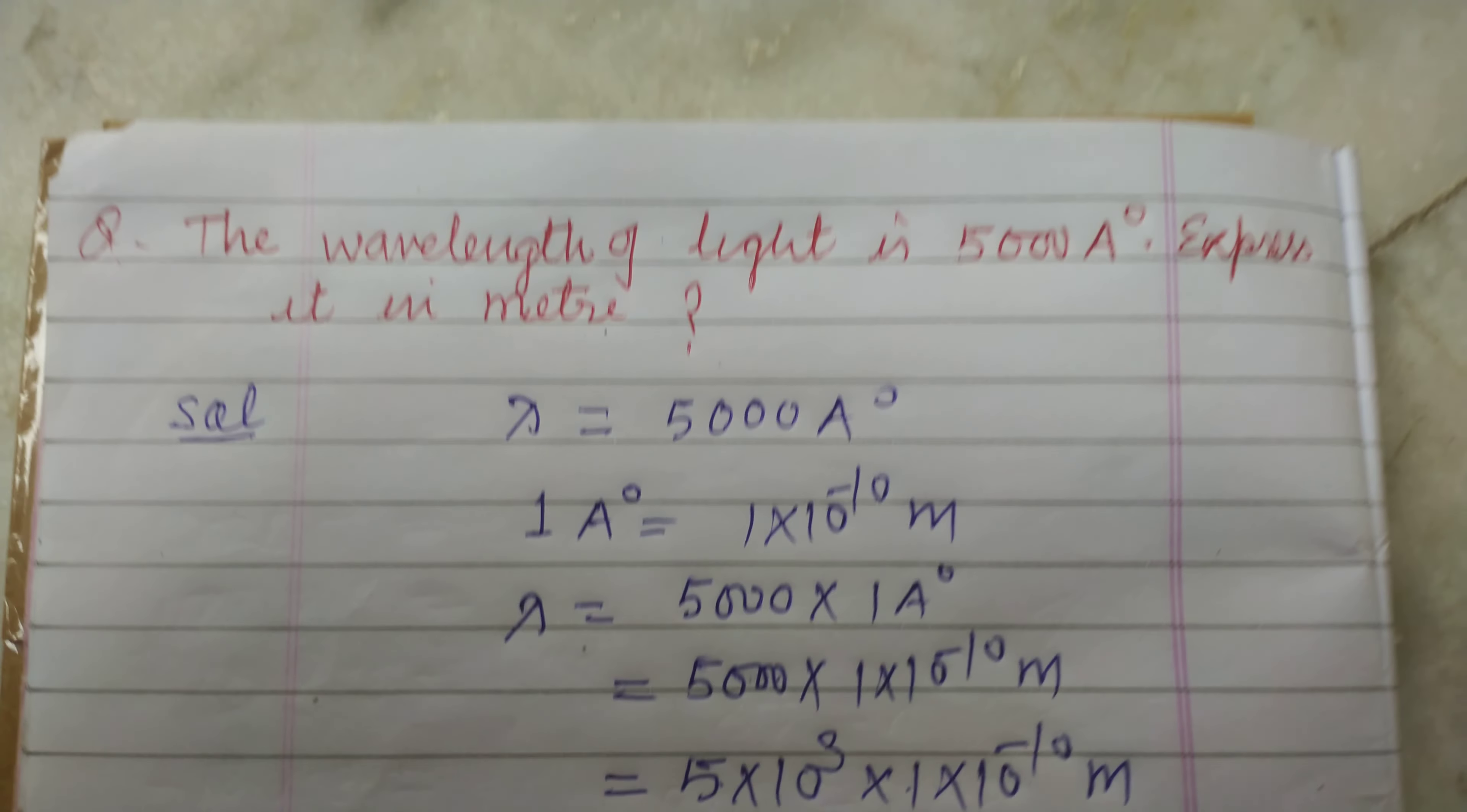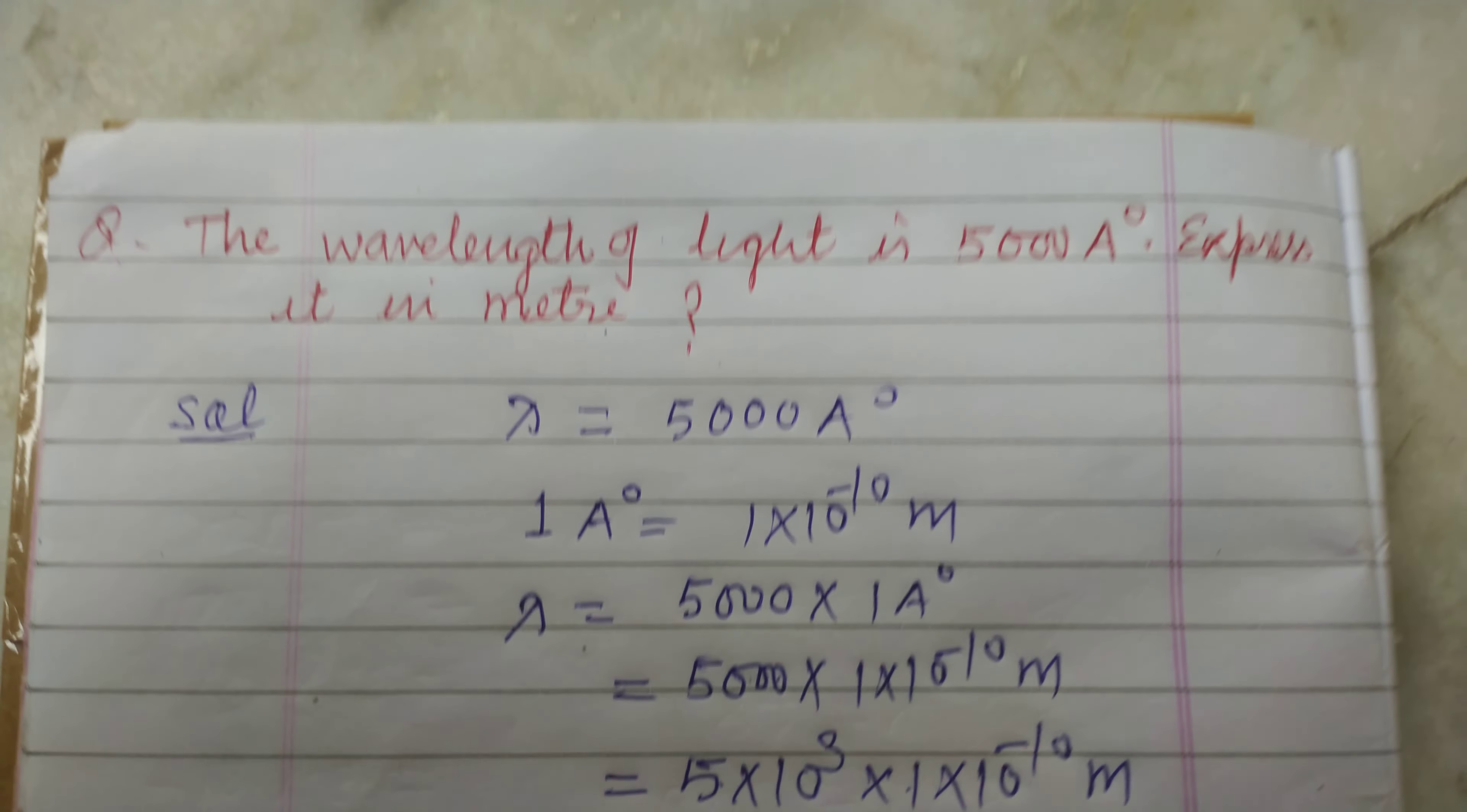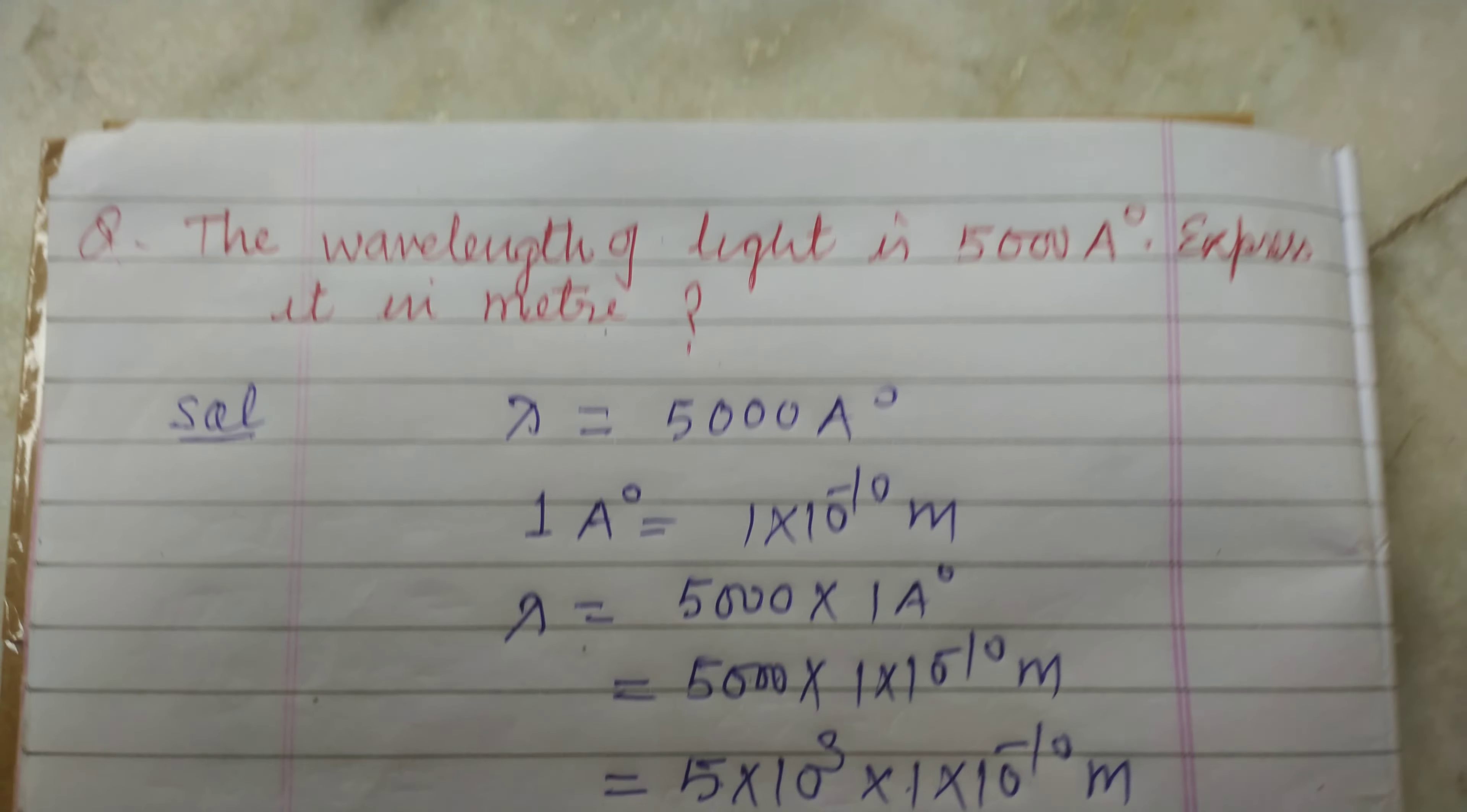So students, first we write the wavelength which is noted by lambda. Lambda is equal to 5000 angstrom. And you know that 1 angstrom equal to 1 into 10 to the power minus 10 meter.